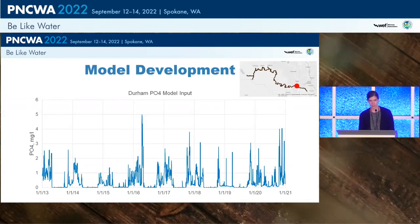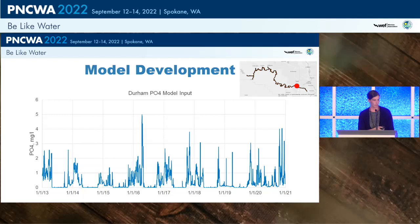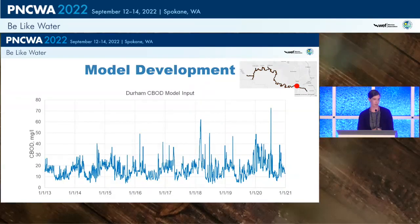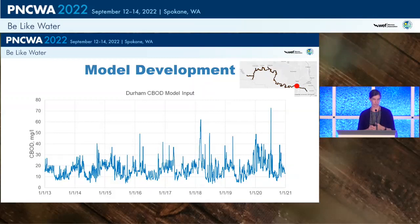Here's an example of what some of those time series might look like. This is for the Durham wastewater treatment plant, showing orthophosphate time series input into the model, developed directly from measured data at the outflow. Similarly for ammonia, developed from daily measurements. For carbonaceous biochemical oxygen demand, this was based on measured five-day BOD data from which we calculated the CBOD ultimate with decay rates, then partitioned into labile, refractory, dissolved, and particulate pools as model inputs. All tributaries, wastewater treatment plants, and boundary conditions require these time series inputs for all the different constituents.